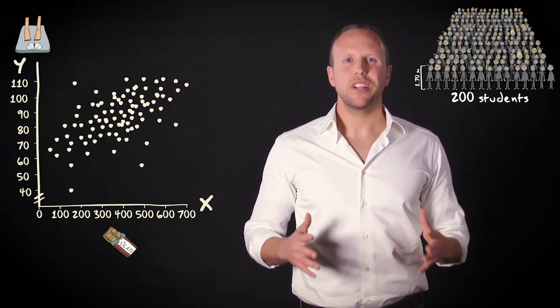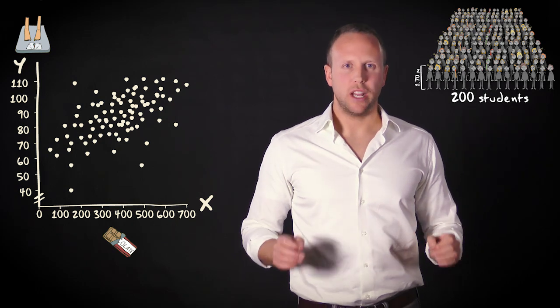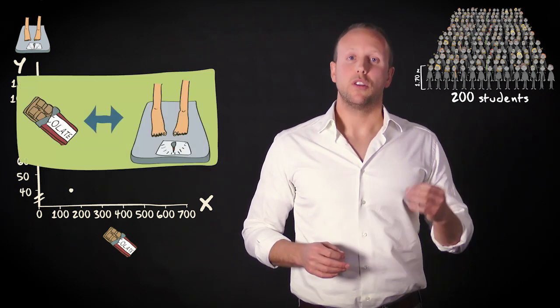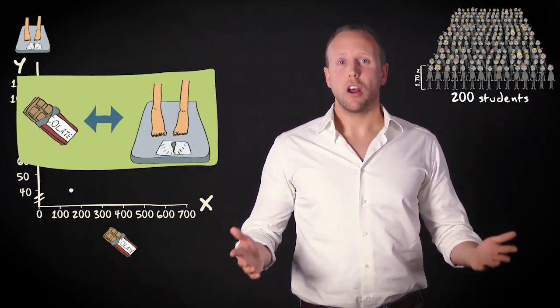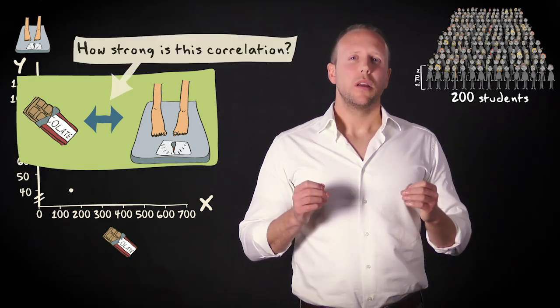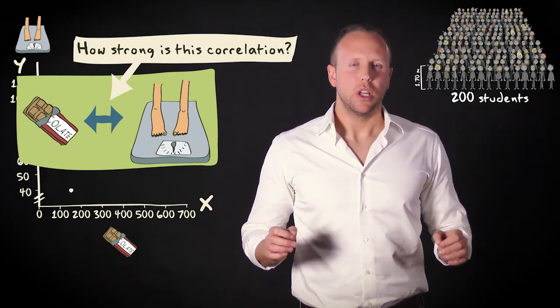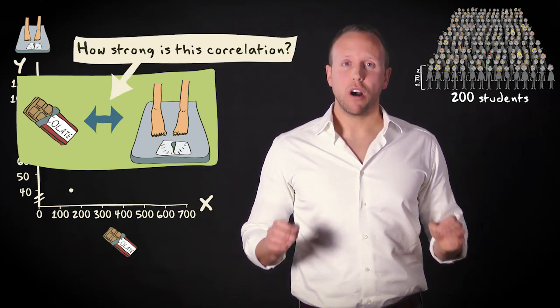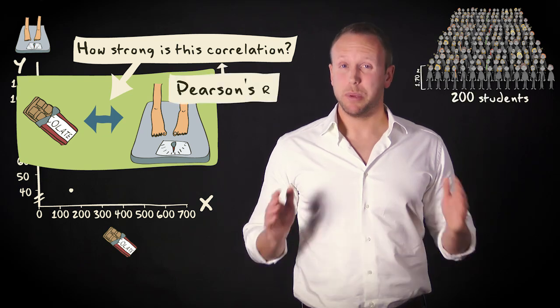This scatterplot shows at a glance that there is a strong correlation between the two variables. The more chocolate someone eats, the larger the body weight. But how strong is this correlation? We will now turn to one of the most often used measures of correlation, the Pearson's R.